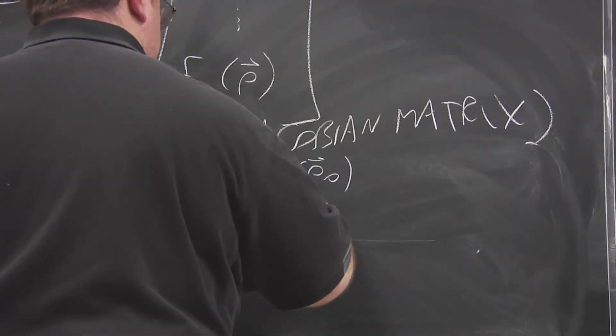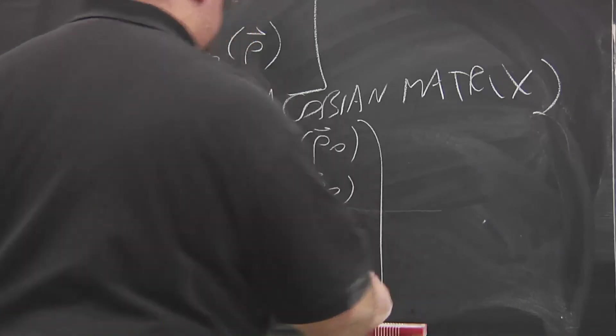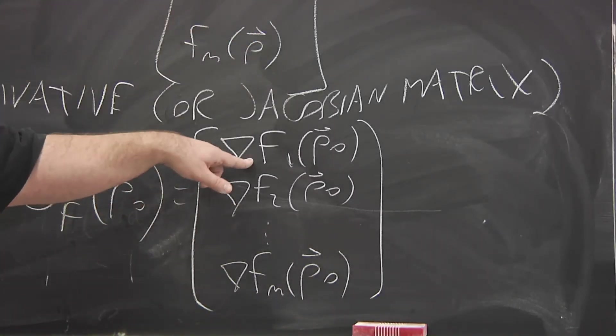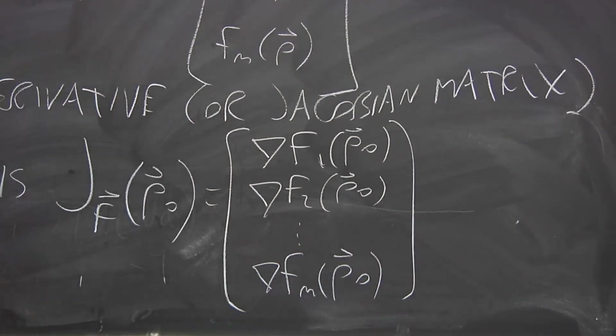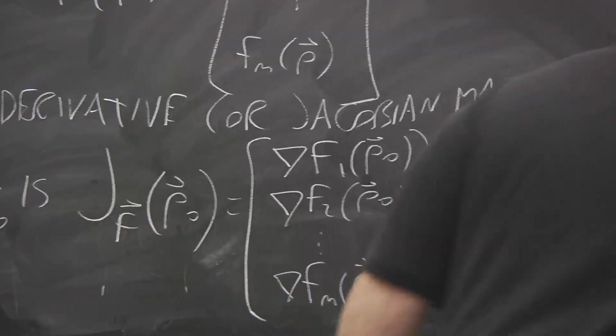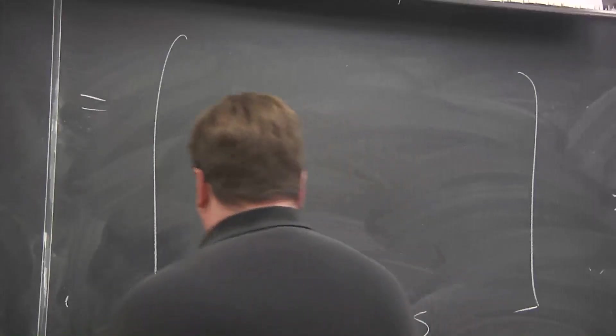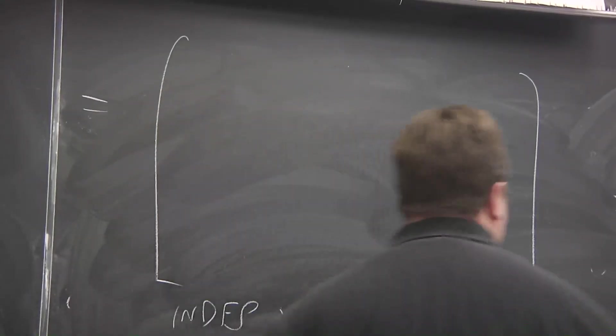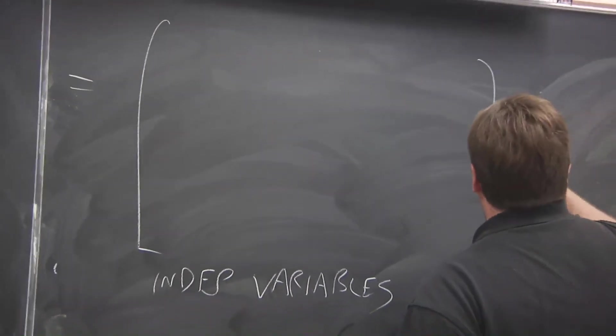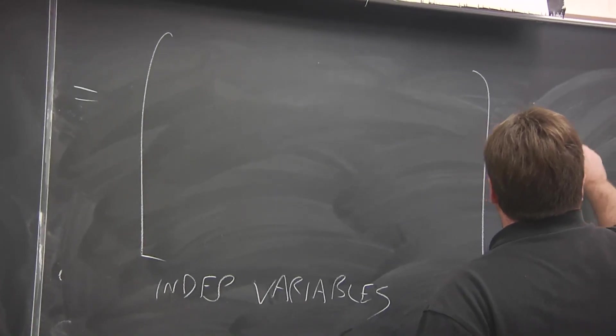So we have gradient of F₁ up here, gradient of F₂ under it, all the way down to the gradient of Fₘ. But then each of these is a row vector containing n partial derivatives. So if we want to see what the whole thing looks like, so your columns correspond to variables, so independent variables that you're differentiating with respect to. Your rows correspond to dependent variables, your outputs, your component functions.